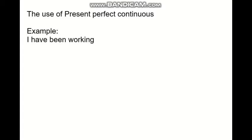Now I will explain the use of present perfect continuous. The present perfect continuous is composed of two elements: the present perfect of the verb to be — have or has been — and the present participle of the main verb root plus -ing. For example: 'I have been working.' Here, 'I' is the subject, 'have' is the auxiliary verb, 'been' is the verb in past participle, and 'working' is the verb in the present participle.